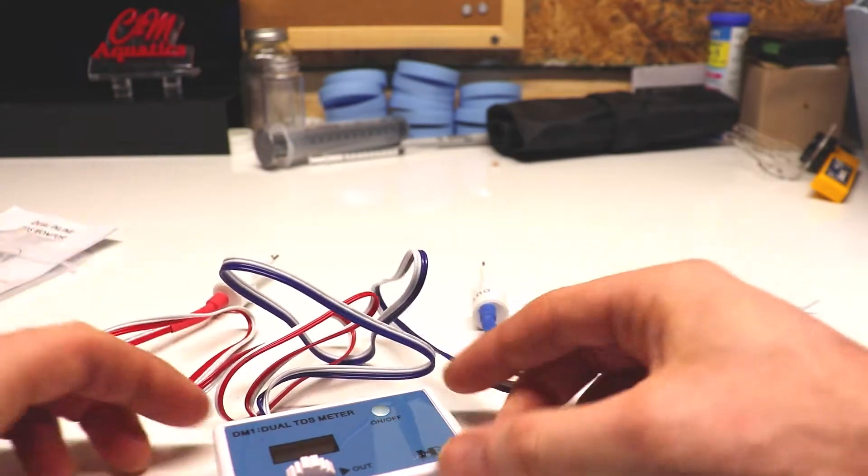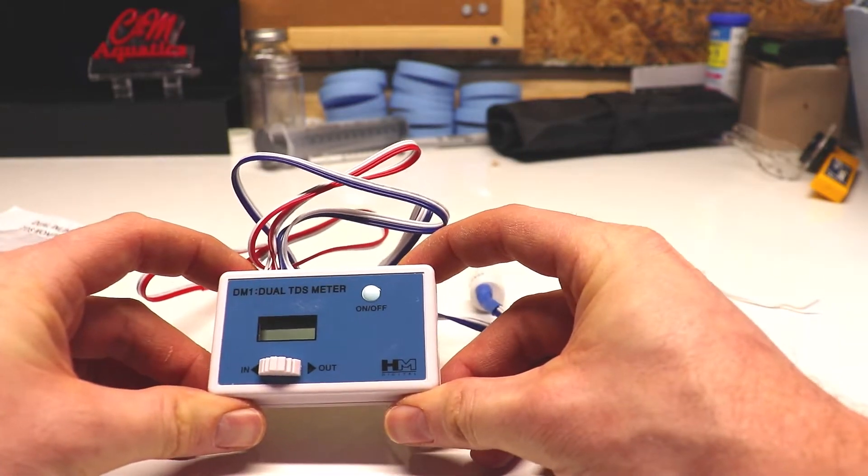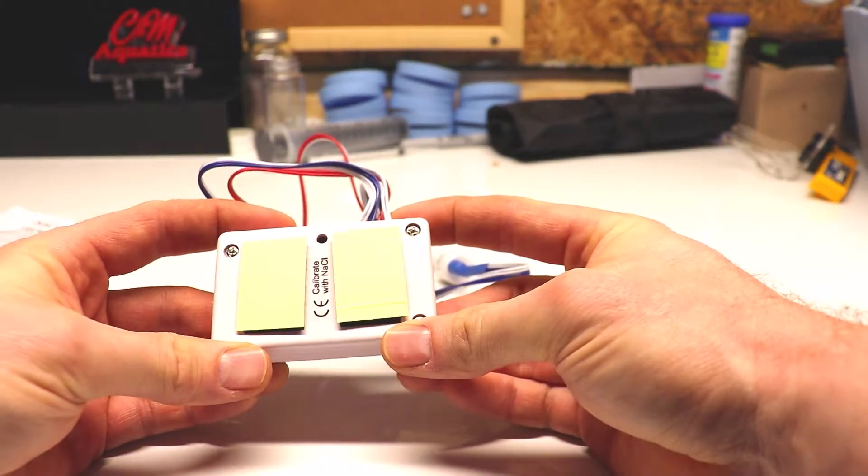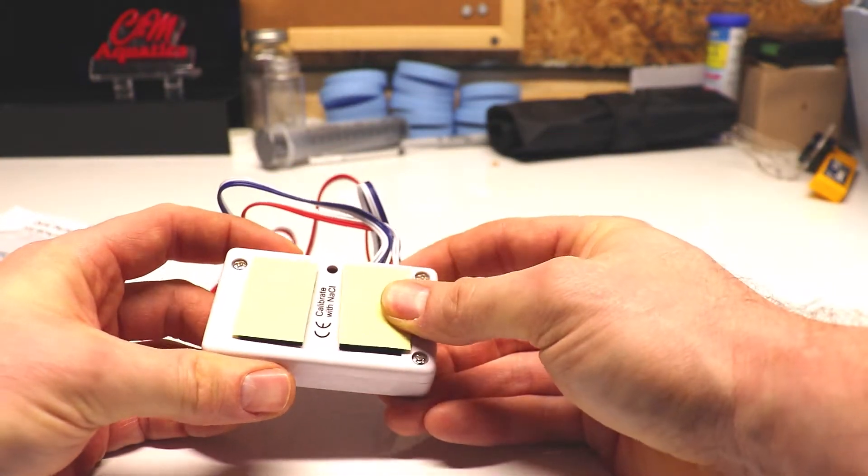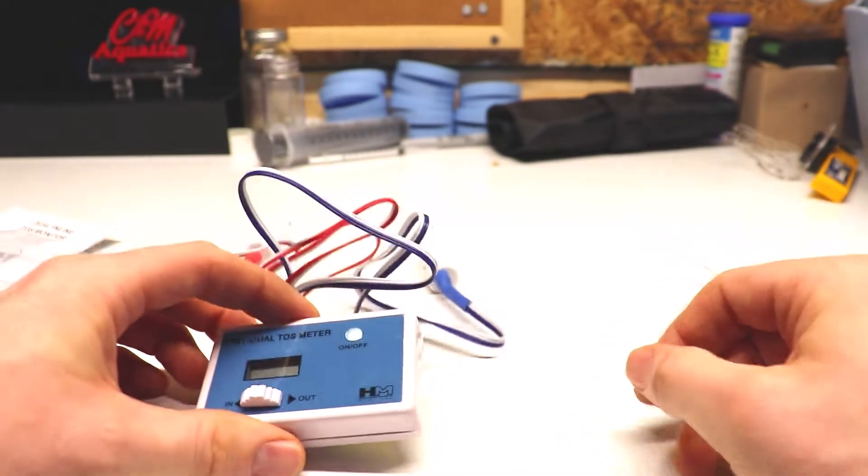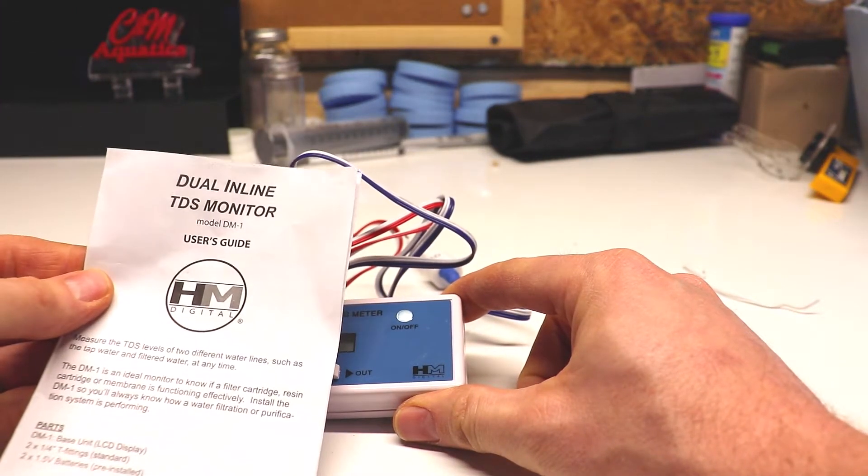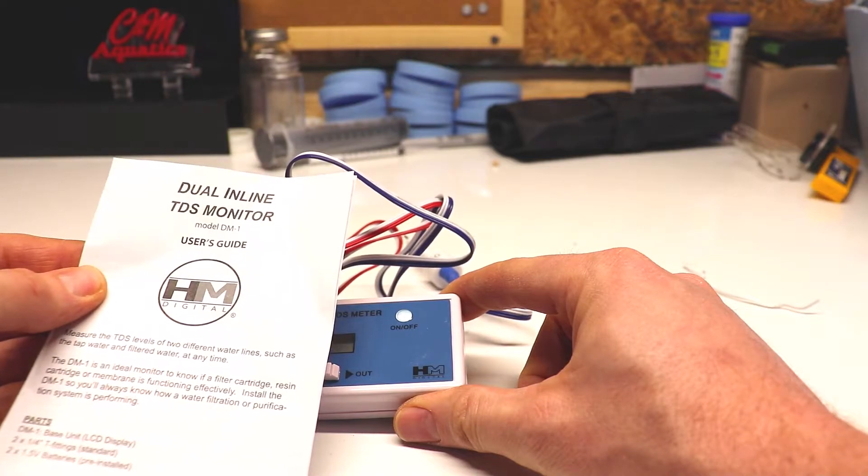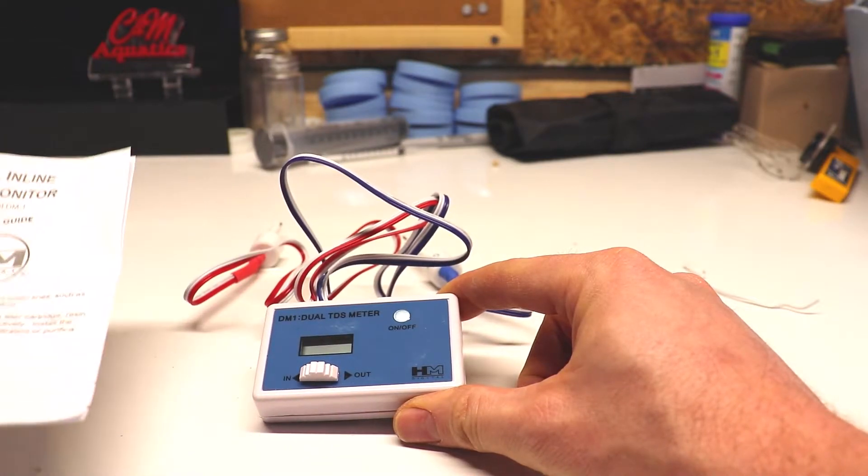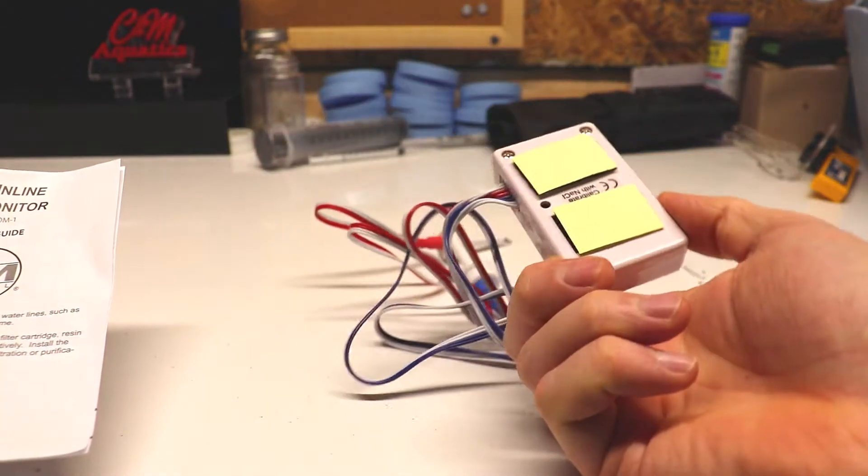This is the first one I've ever put on, but I thought I would film it in case somebody else needs to do the same thing. I don't think it'll be too bad. This meter is made by HM Digital and it comes with the batteries, the probe from the meter, and some sticky tape on the back.